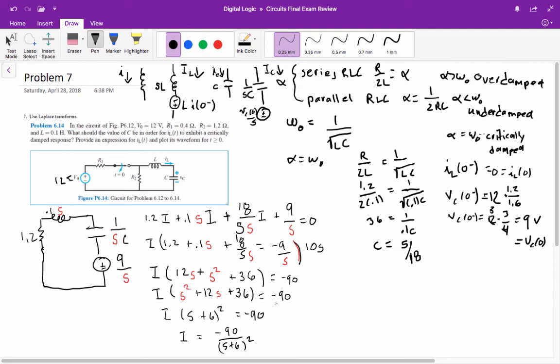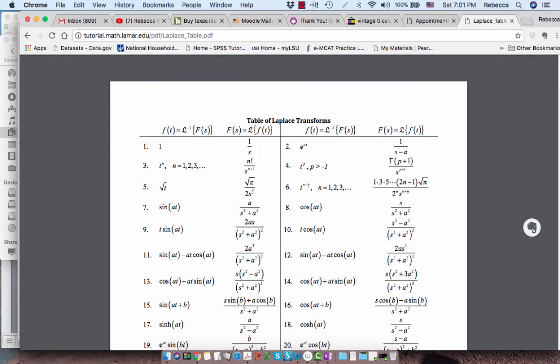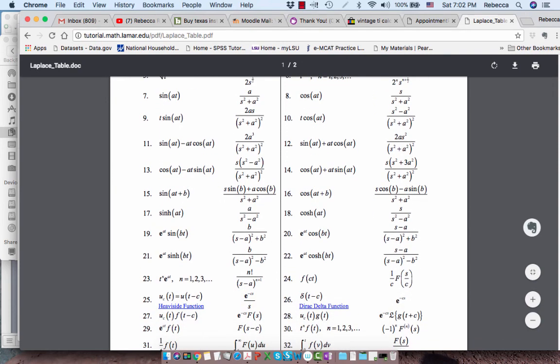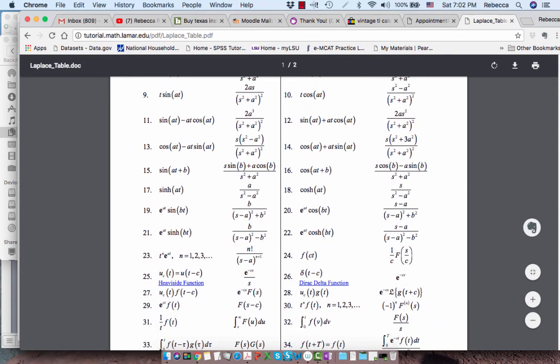Now I take the inverse Laplace transform of that to get our answer. This is one you can look on the tables and find out. If you have 1 over S plus 6 squared, let's take a look at that. And we're right here. N would be 1. So this would be T to the first E to the negative sixth T.